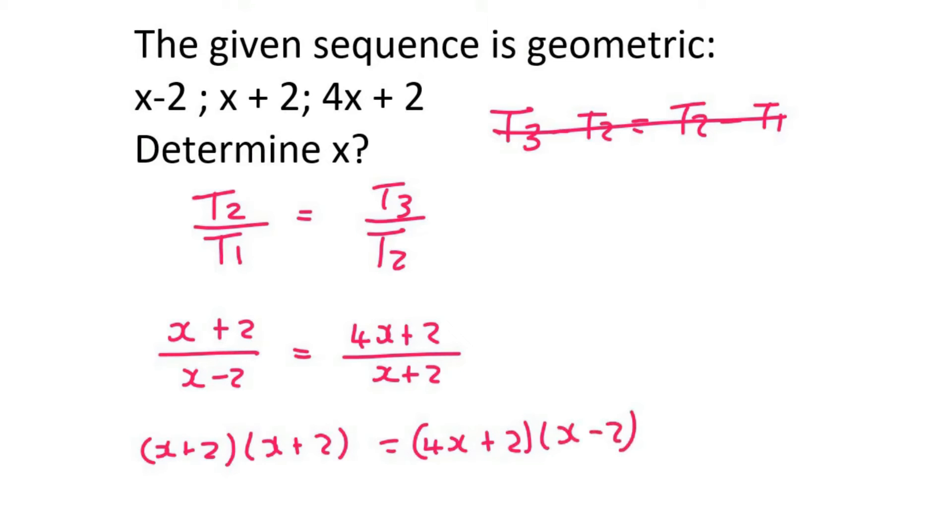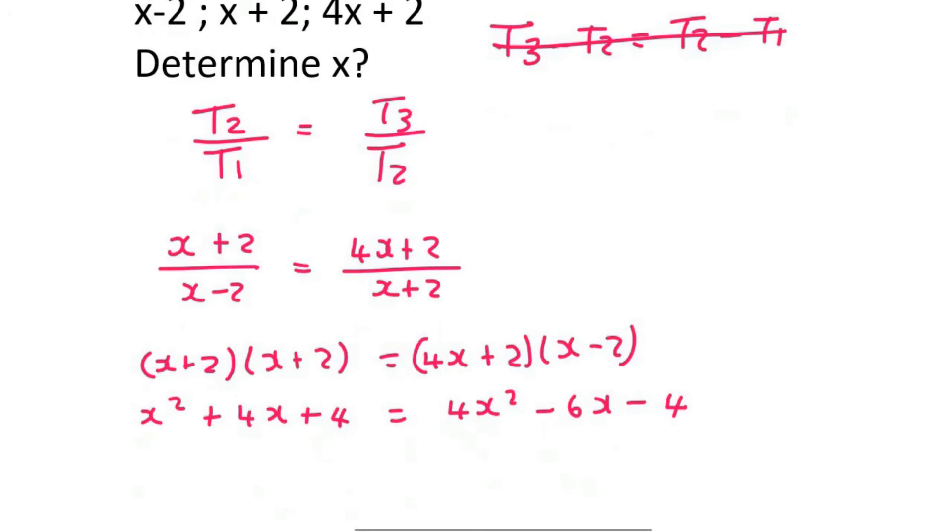Now we multiply everything out. I'll do this fairly quickly. This gives us minus 6x minus 4. I'm going to move everything to the right side to have a positive x squared, though you don't have to do it that way. This is what you should end up with.